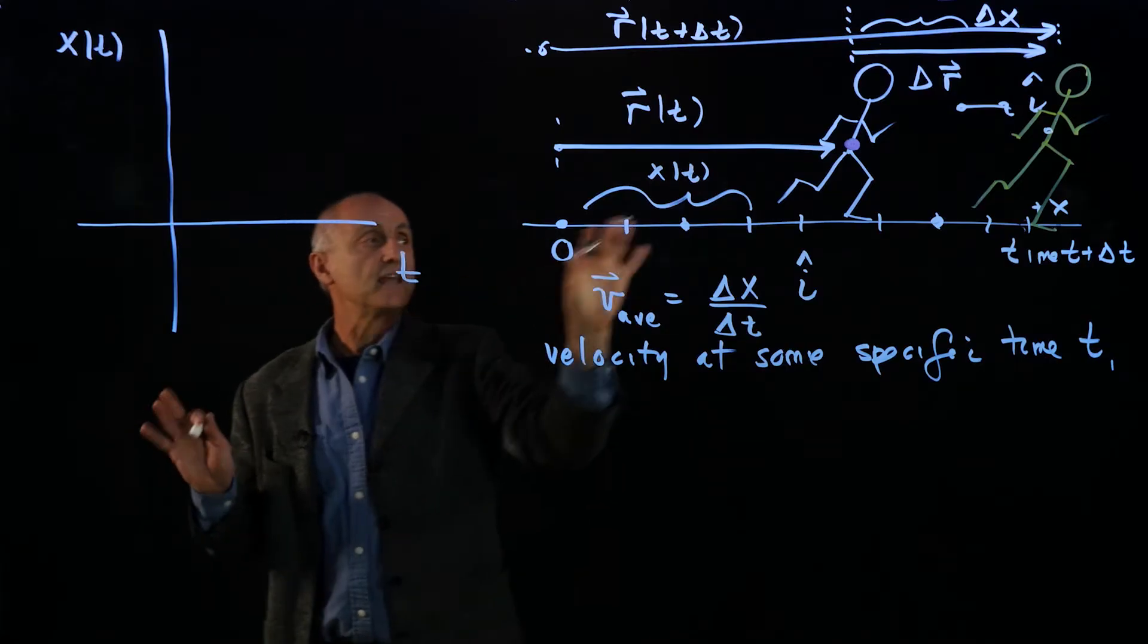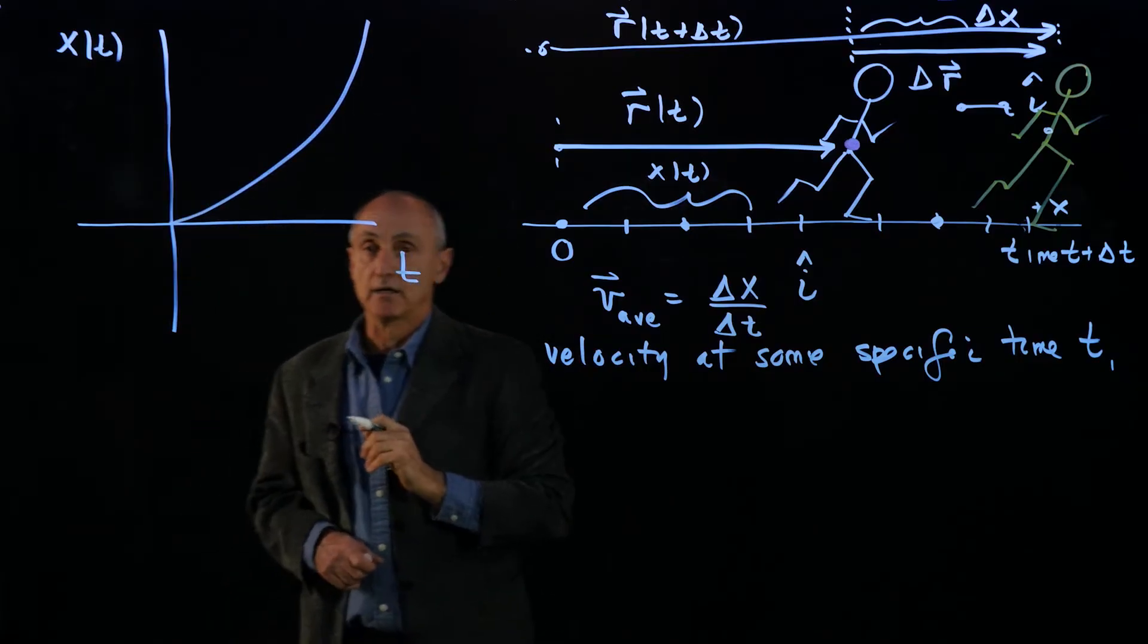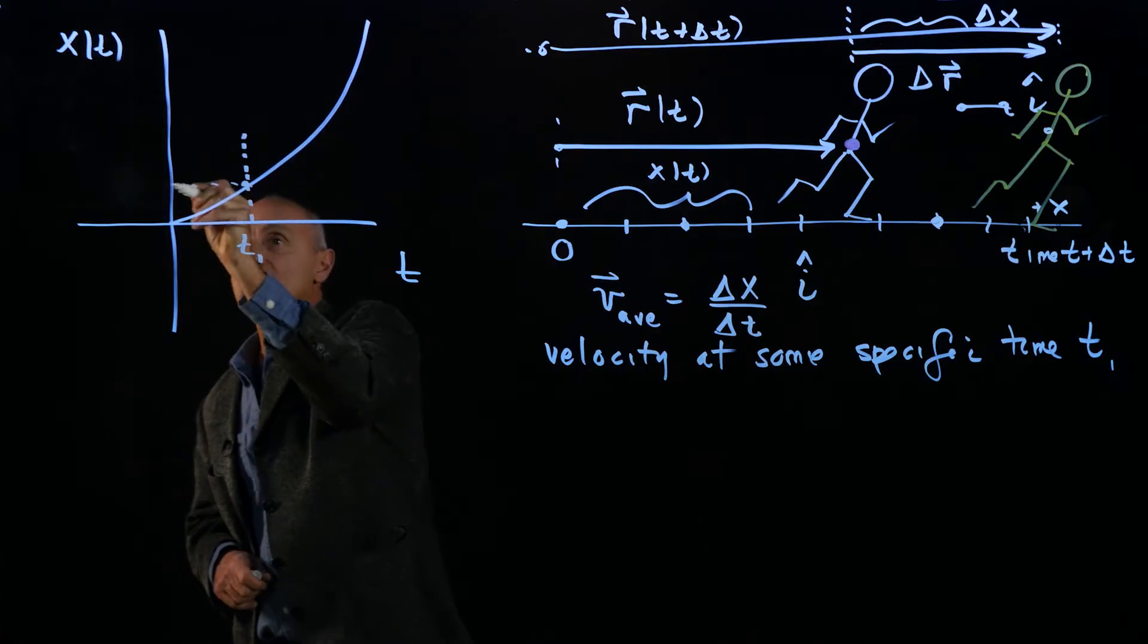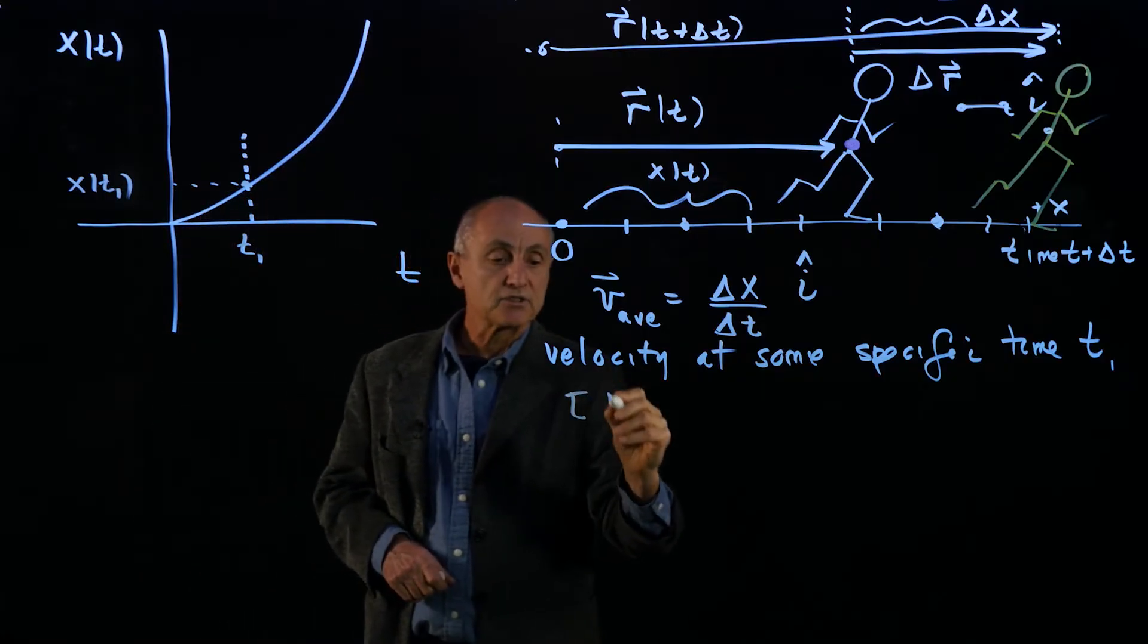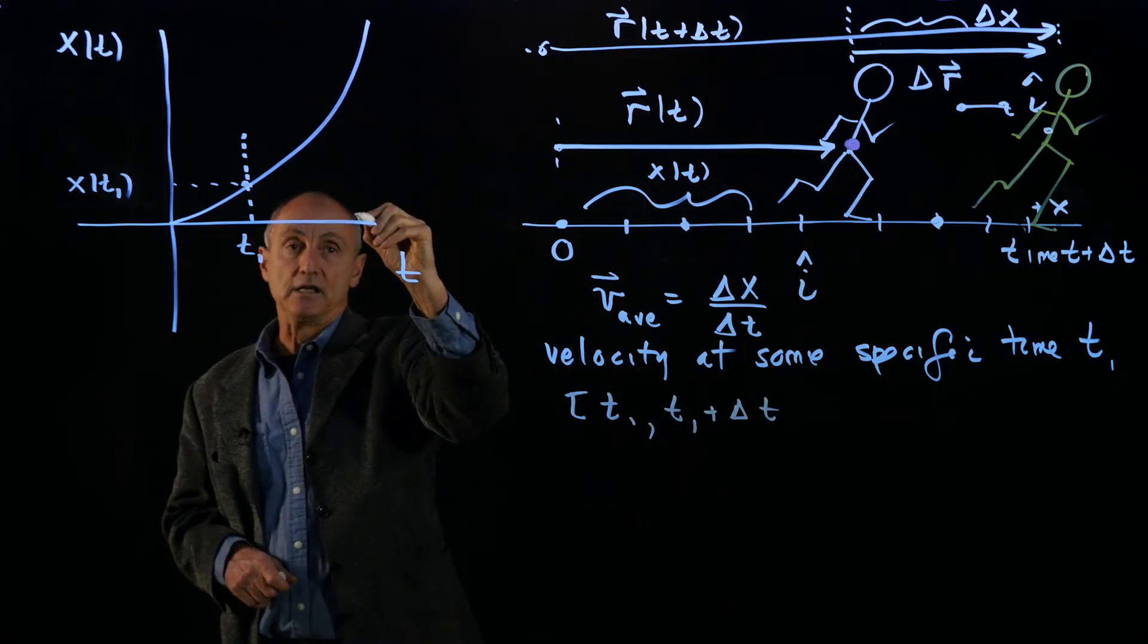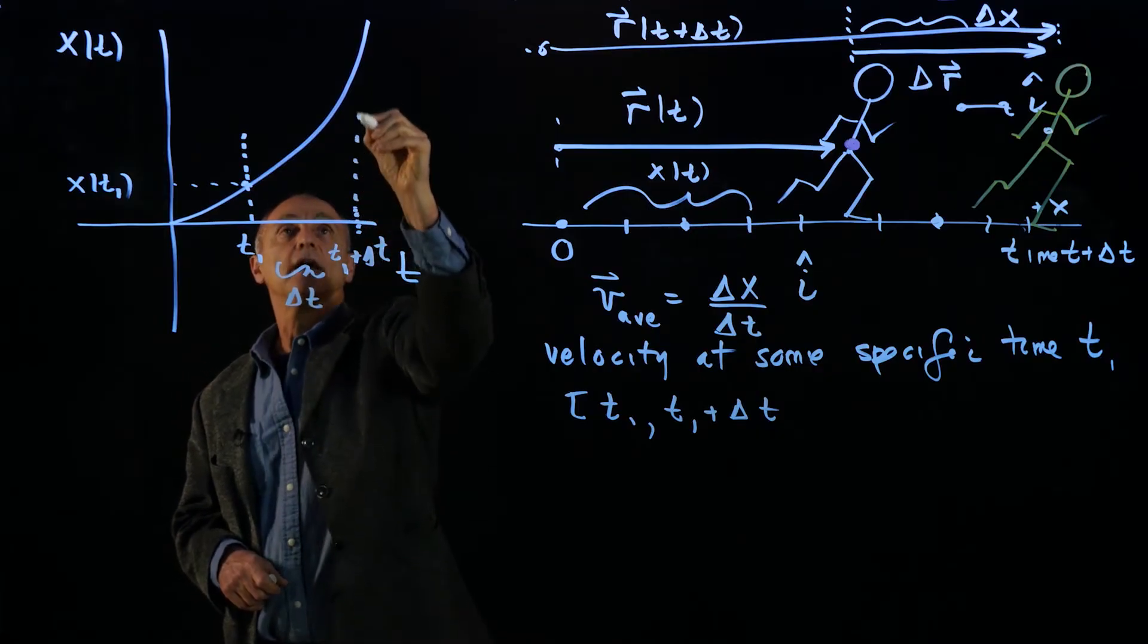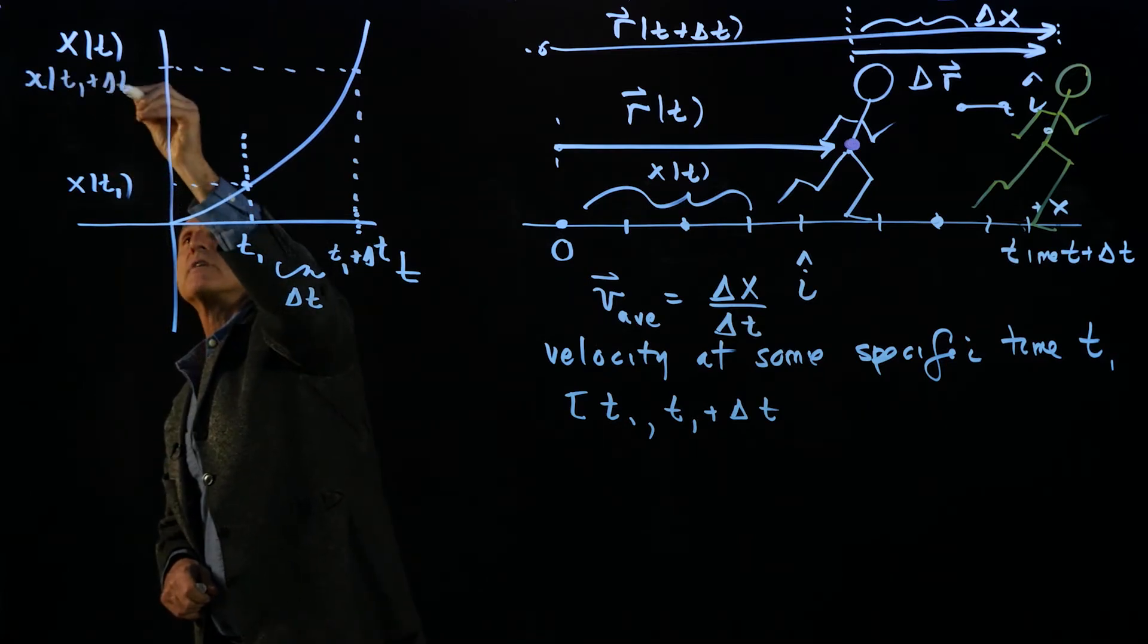So we're going to plot the component of the position function with respect to time. Now let's just say that the runner started at the origin at time equals 0 so I can make some type of arbitrary plot of that position function. And let's indicate in particular the time t1. So what this represents is x of t1. And so first I'd like to consider the interval t1 and t1 plus some later time delta t. So let's make this t1 plus delta t. This is the time delta t. And up here we have our position function of t1 plus delta t.